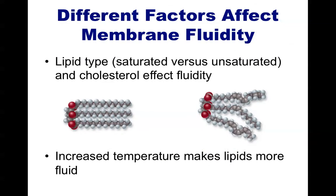For example, saturated fatty acids pack together tighter and have less fluidity than unsaturated fatty acid chains, which are kinked and cannot pack together as tightly. This difference in fluidity might be easier to remember if you think of common saturated and unsaturated fats. Butter is a saturated fat and is normally found as a solid, while olive oil is more fluid and is usually a liquid. Of course, changing the temperature can change the situation, either melting the butter or freezing the oil, changing one to a liquid or the other into a solid.